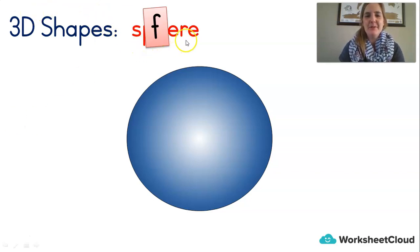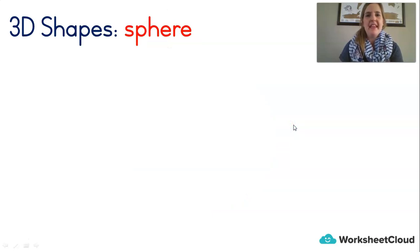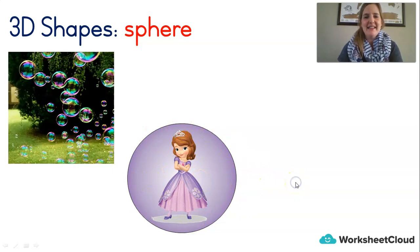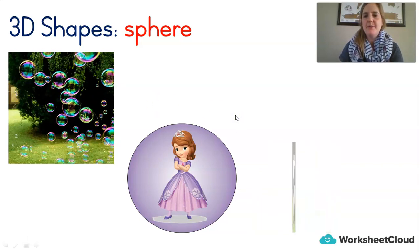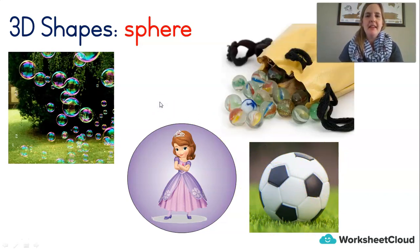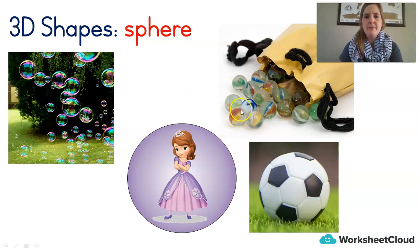Try saying the correct word: sphere. This shape is a sphere. Let's talk about some spheres we can see around us. We've already said a ball. Here's a Sophia the First ball. Bubbles — of course, bubbles are in a sphere shape; they are round. A soccer ball — that's a sphere shape. And marbles — I love playing with marbles; marbles are in a sphere shape.